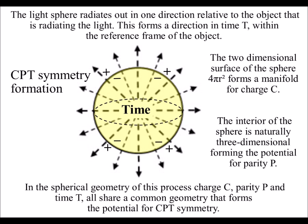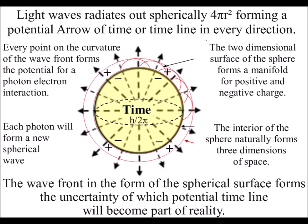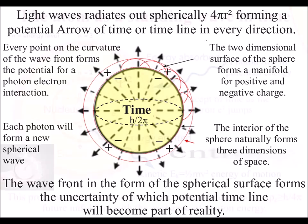The two dimensional surface of the sphere forms a manifold for the movement of positive and negative charge. Our ever changing world is based on this manifold and it could be called the fourth dimension of time.